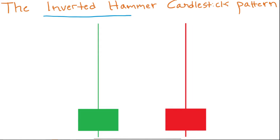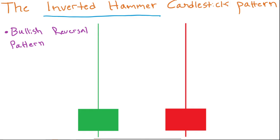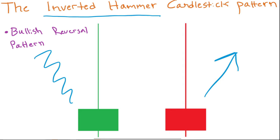The inverted hammer pattern — what is it? First of all, this is a bullish reversal pattern indicating a potential reversal to the upside. There are no certainties in trading, but the inverted hammer indicates that if we have a strong downtrend and we see an inverted hammer appearing, this is a possible sign that the trend might reverse to the upside, or that the trend reverses to a neutral sideways trend.